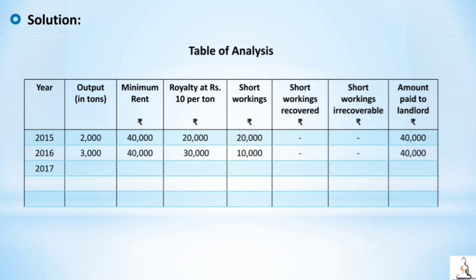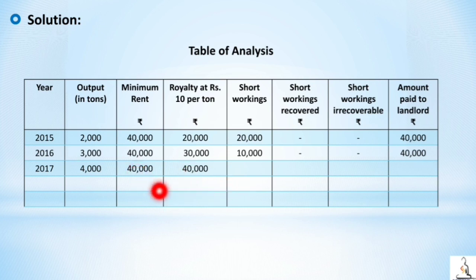In 2017, output is 4000 tons, minimum rent is 40,000, and royalty is 4000 × 10 = 40,000. Royalty equals minimum rent, so royalty becomes payable. Short workings, short working recovered, and short working irrecoverable are all nil. Amount paid to landlord is 40,000.